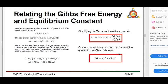Simplifying the equation by taking into account the delta G values of the different reactants and products, we arrive at: delta G = delta G-naught + RT*ln(Q), where Q is the reaction quotient.